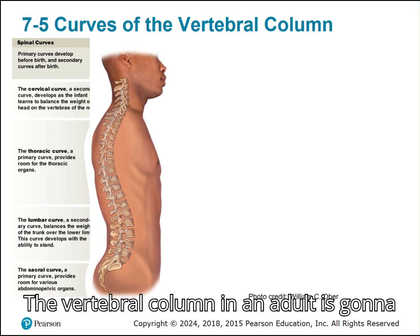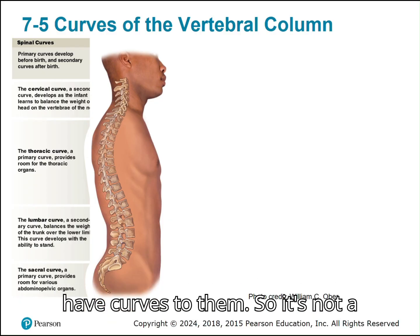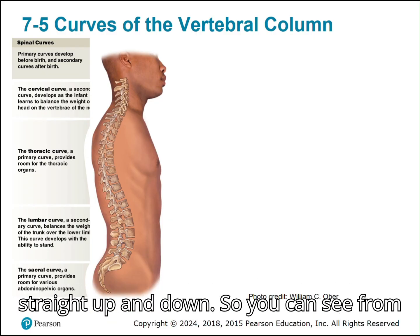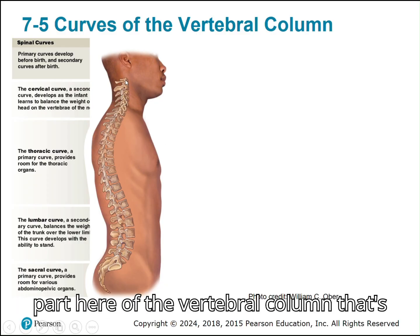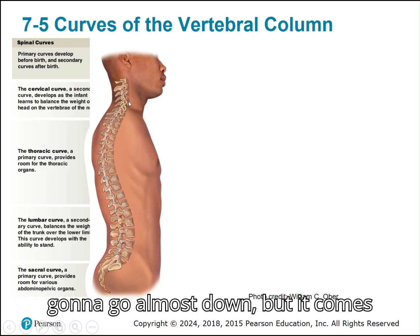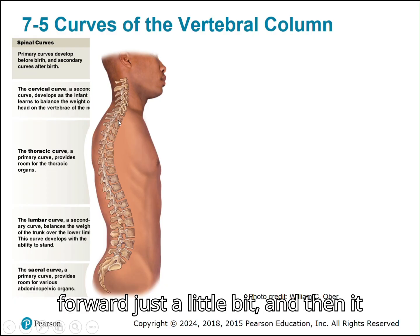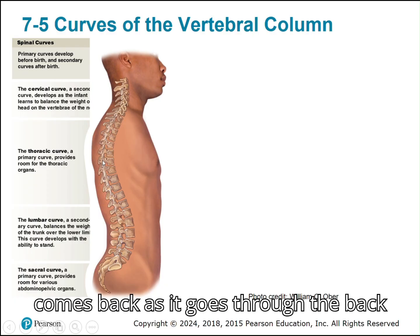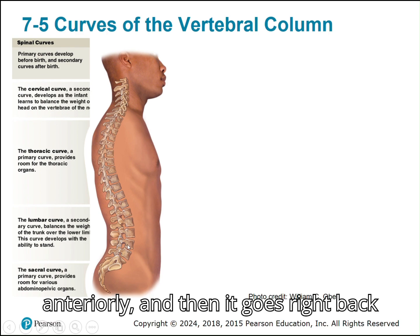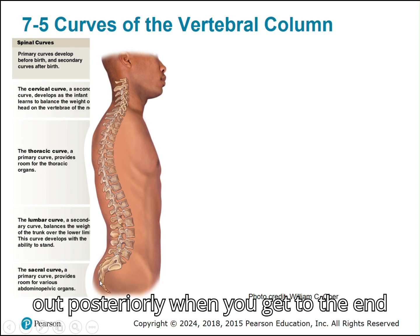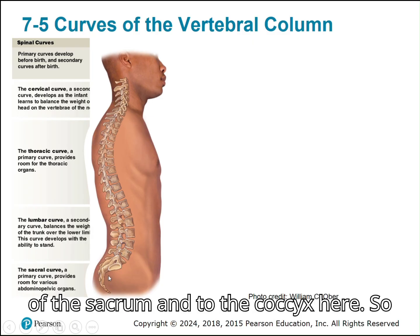The vertebral column in an adult is going to have curves — it's not straight up and down. From this lateral view, you have the first part of the vertebral column going almost down but coming forward just a little bit, then going back, then coming back anteriorly, and then going back out posteriorly when you get to the end of the sacrum and the coccyx.